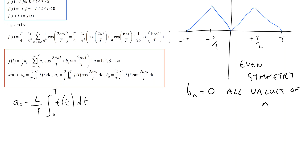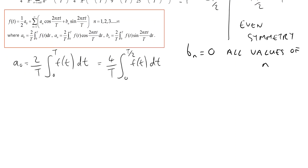Now in this case we have an even function, so we can make use of the fact that the integral from 0 to T would require a different definition between 0 and T over 2 as between T over 2 and T. Because it's an even function, we can say that a0 is equal to 4 divided by T times the integral between 0 and T over 2 of f of t, dt. So all we need to do now is put in the definition of f of t. We can write a0 equal to 4 over T times the integral between 0 and T over 2, where f of t over that range just has a value equal to t, integrated dt.